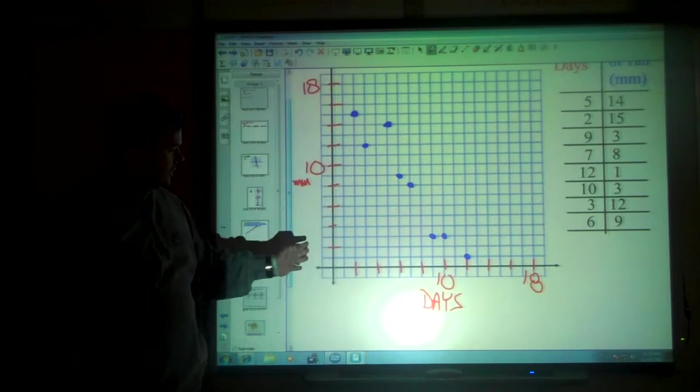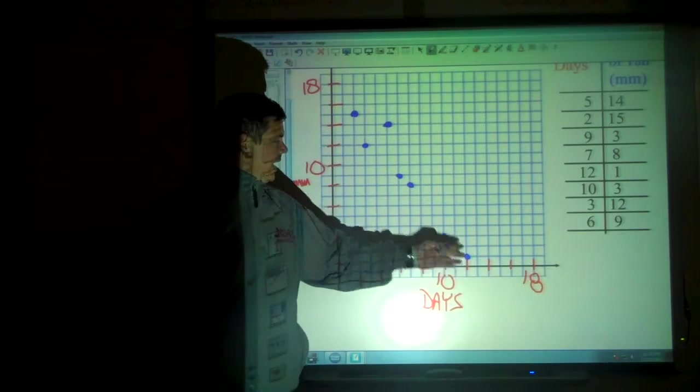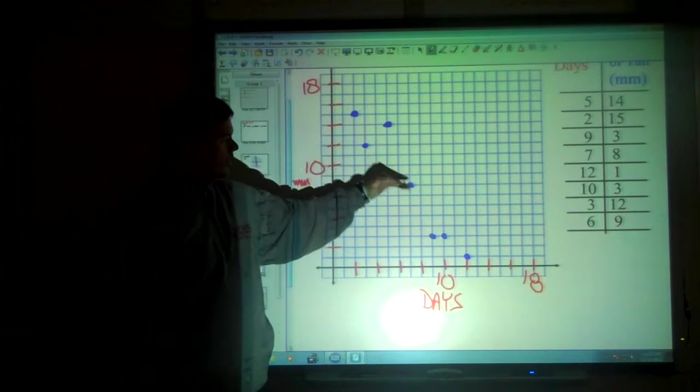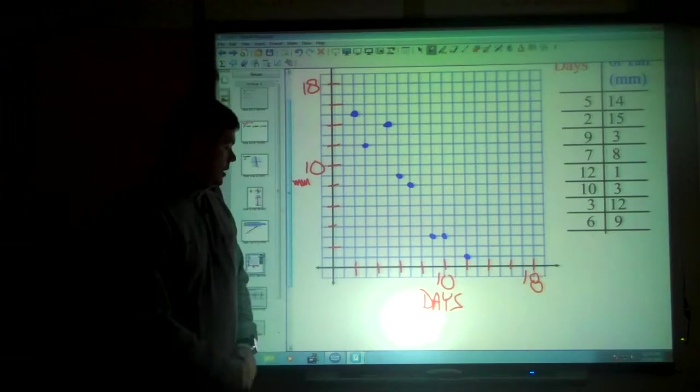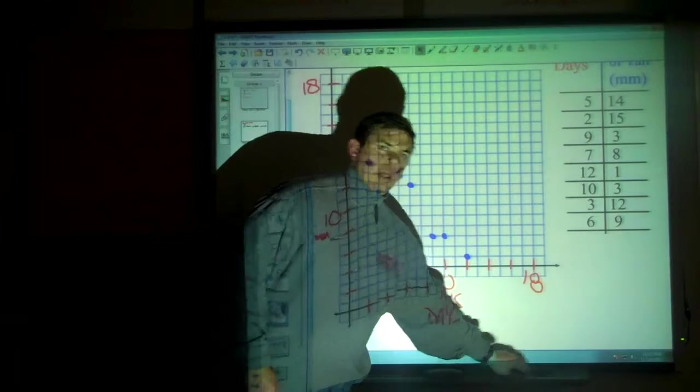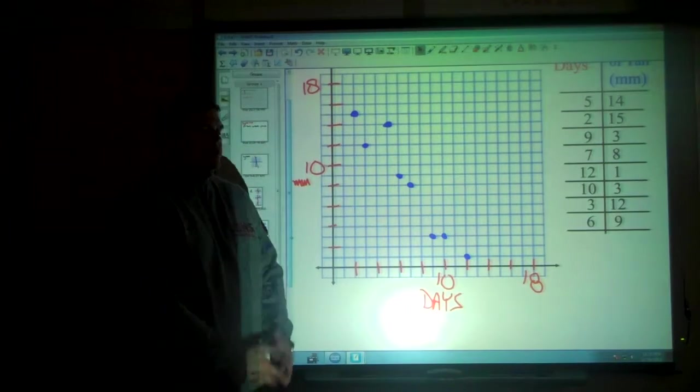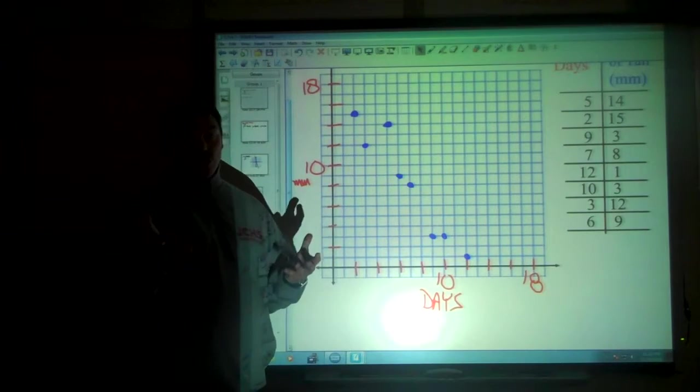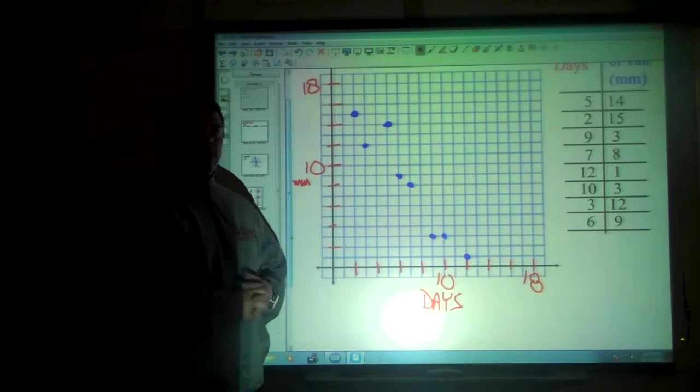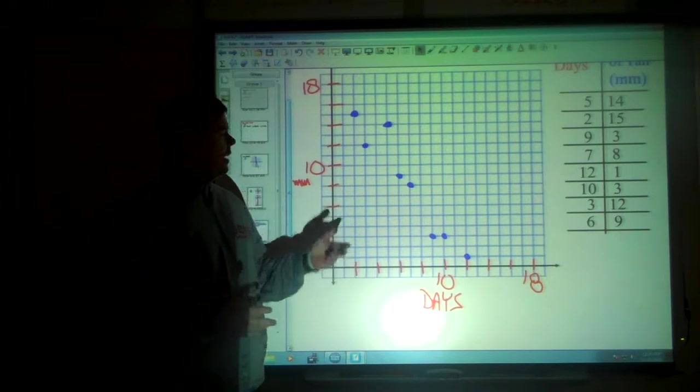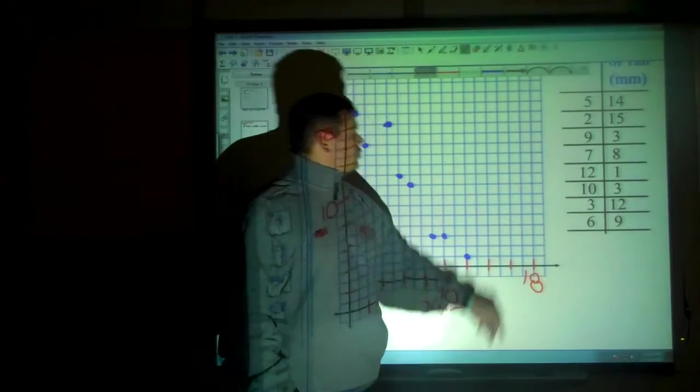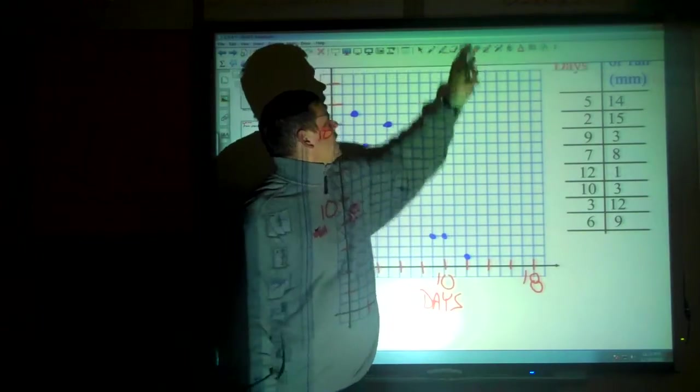Now as you look at it, as the tadpole tends to get older in days, the tail is getting smaller and smaller as it becomes a frog. Now why isn't it a perfectly straight line? It's not a perfectly straight line because not all frogs are going to grow or shrink their tail at the exact same amount. But we can take the data that's here and we can try to make ourselves a line of best fit.